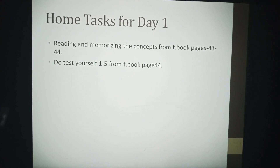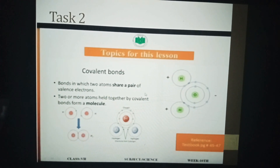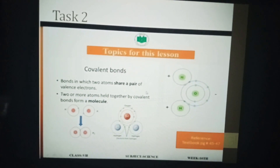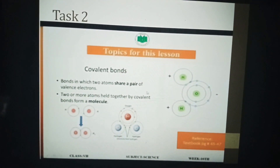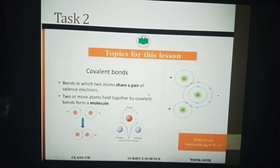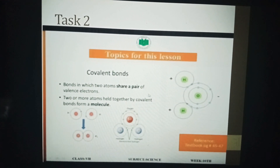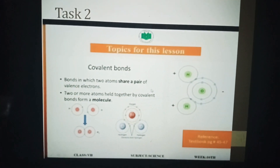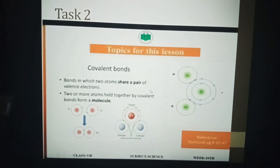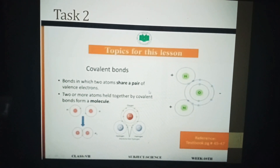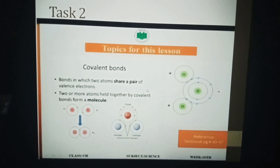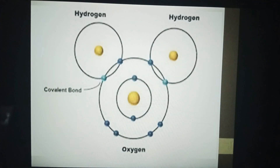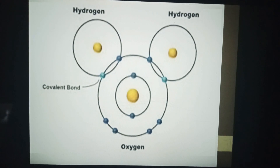Now it's time to share the Task Two topics for this lesson: covalent bonds and the process of formation of covalent bonds, from textbook pages 45 to 47. Covalent bonds are bonds in which two atoms share a pair of valence electrons. Two or more atoms held together by covalent bonds form a molecule.